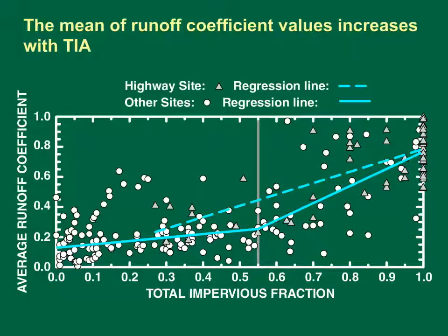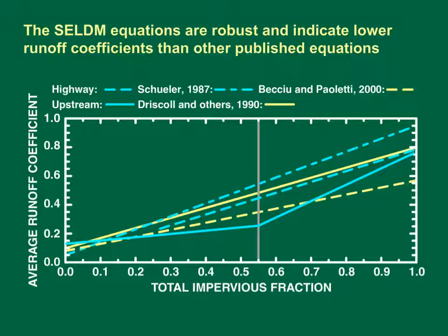Some sites have average runoff coefficients that seem too high for the measured TIA. These sites may be showing the effect of natural impervious areas such as bare rock, open water, or saturated wetlands. The SELDOM equations indicate lower runoff coefficients than some other equations from the literature. Other equations shown for comparison include the Schuller equation for urban runoff, the highway site equation by Driscoll and others, and the urban basin equation by Becku and Pallotti. Except for very low impervious fractions below about 0.1, the SELDOM equations are lower than other regression lines, likely because they were developed using data from more sites and nonparametric regression methods, making them less affected by extreme outliers.